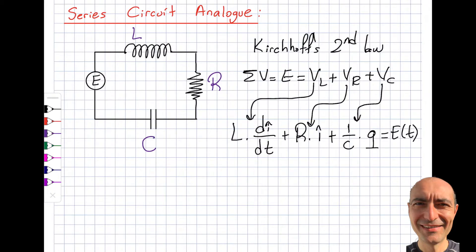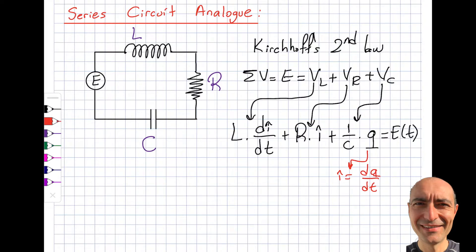I was doing this higher-order differential equation and all of a sudden I have a first-order differential equation. I have i here and i here — where is the second order? Well, the current is defined by i = dQ/dt. You can see that the rate of change of charge equals the current. So what I will do now is write everything in terms of charge, not current — wherever I see i, I will insert dQ/dt.